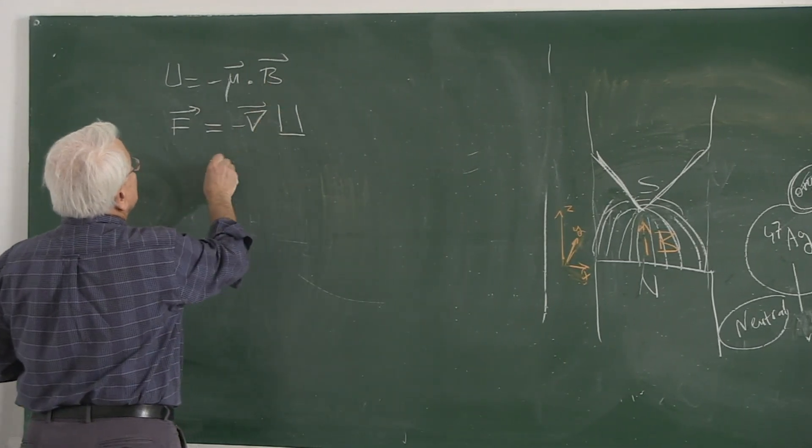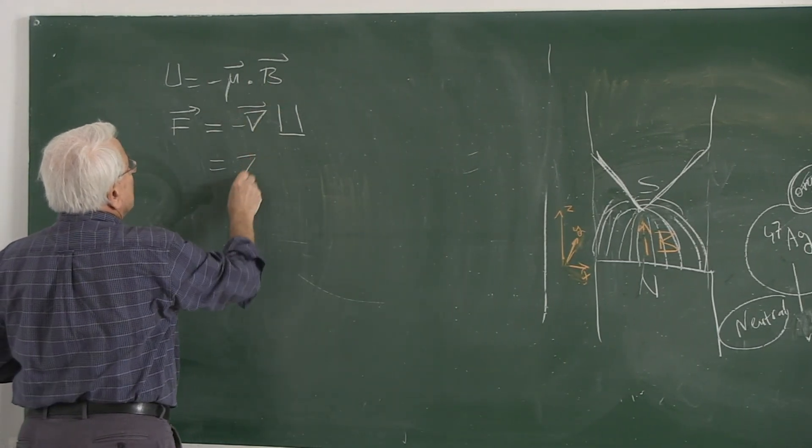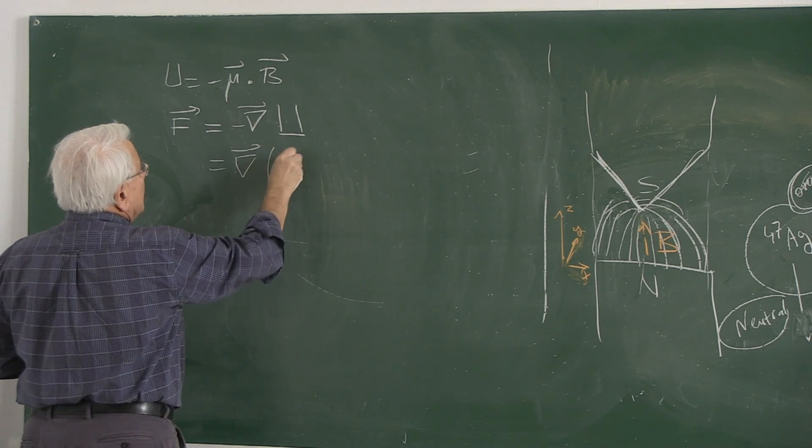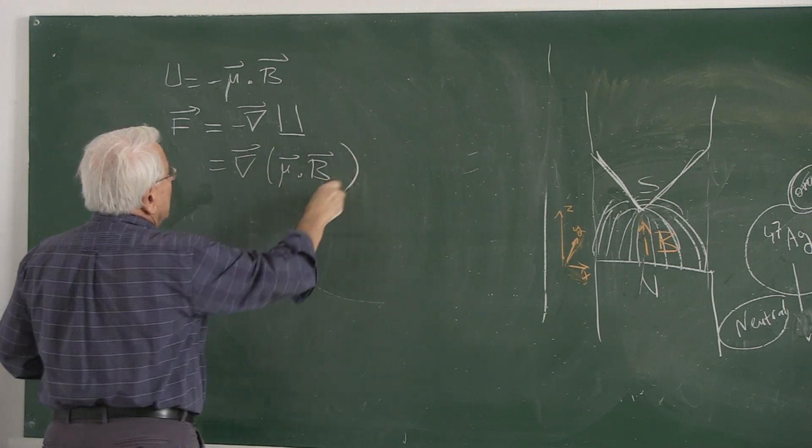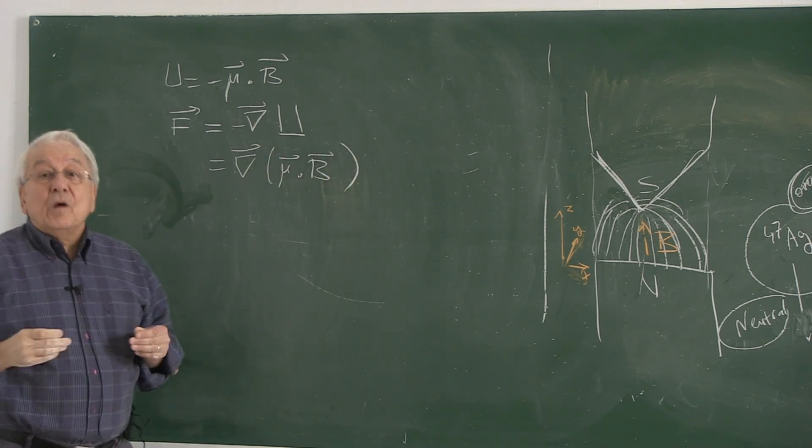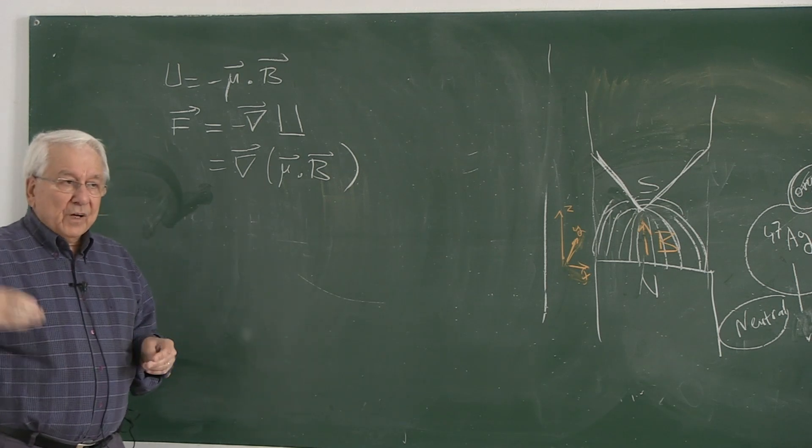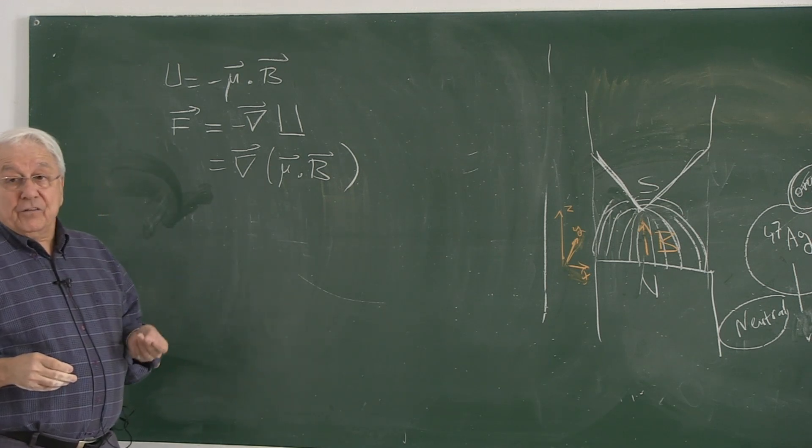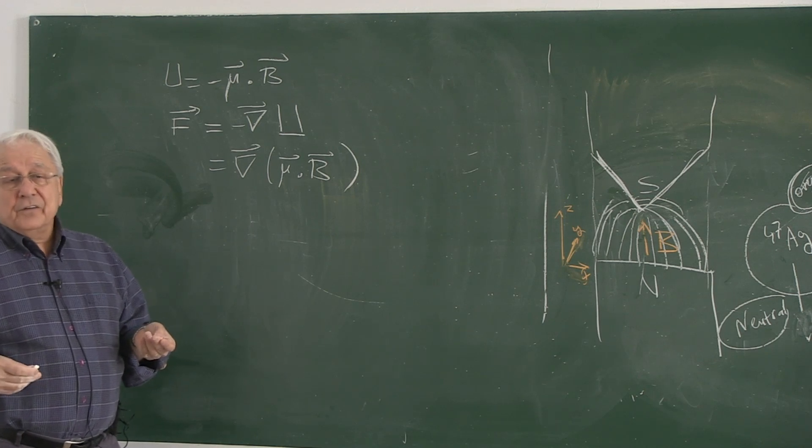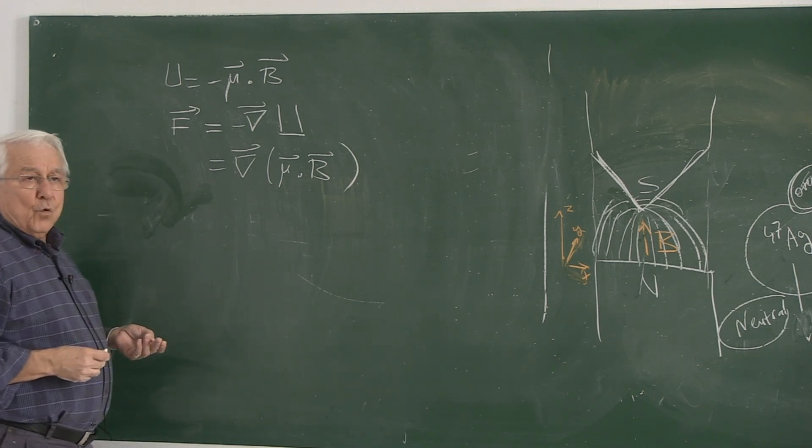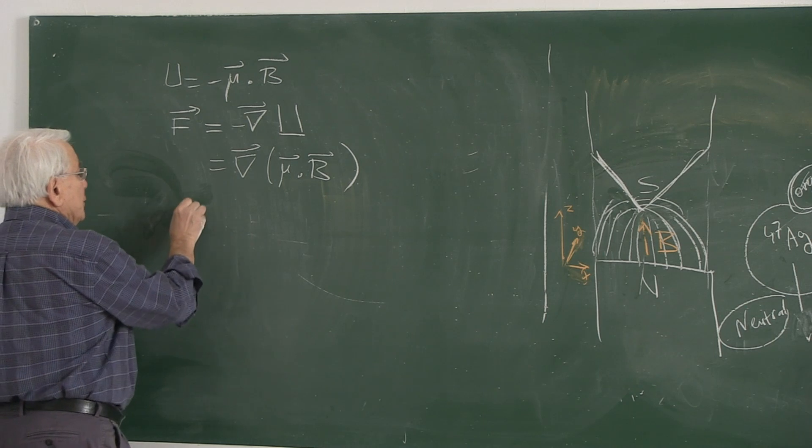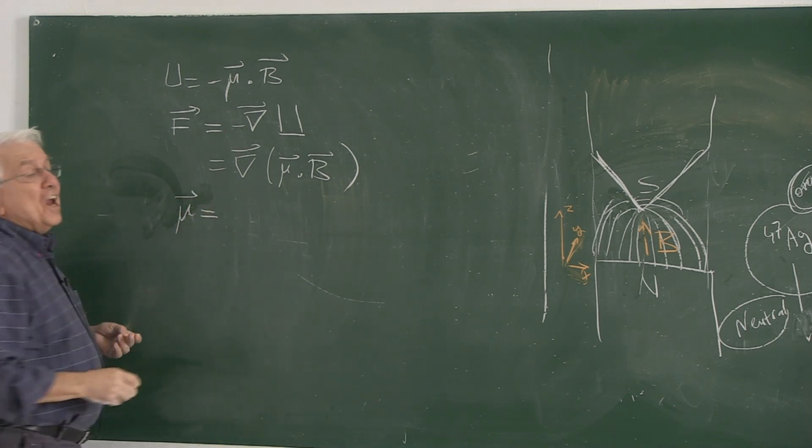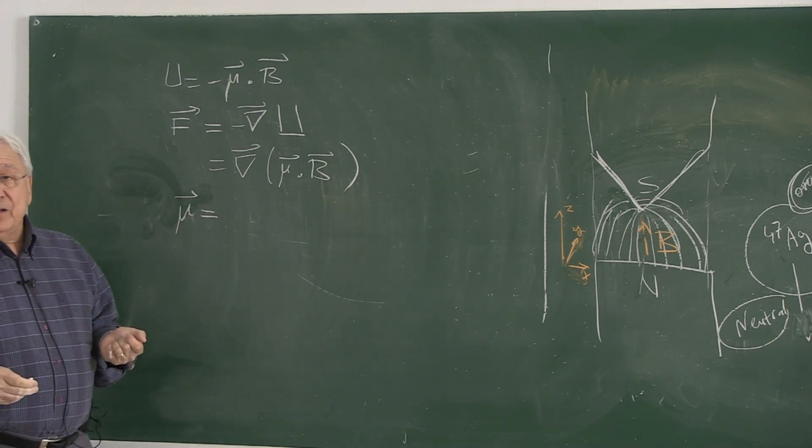If you write this, minus and minus is plus mu dot gradient of B is the force it's going to be subject to. Then it's going through this. Which direction, what is the direction of the force? Let's analyze it. Mu is the magnetic moment. How is the magnetic moment of a spin carrying object? Depends on the spin.